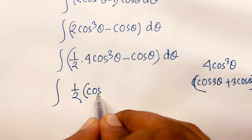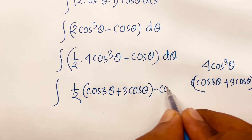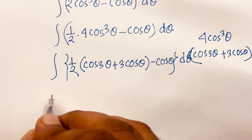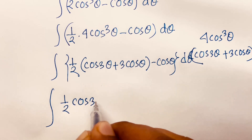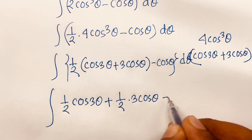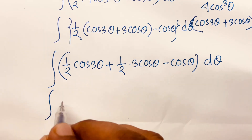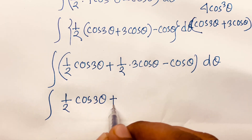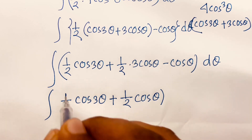Expanding and combining terms: we have cos(3θ) + 3cos(θ) - cos(θ), which simplifies to cos(3θ) + 2cos(θ). The integral becomes (1/2)·(cos(3θ) + 2cos(θ)) dθ.